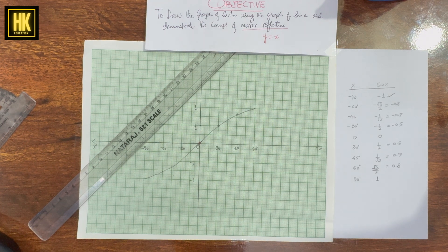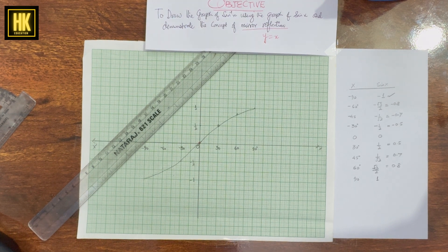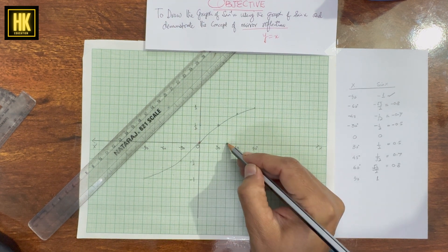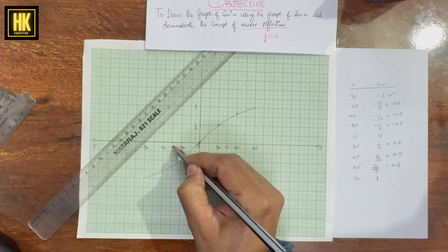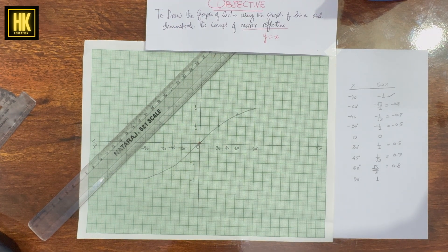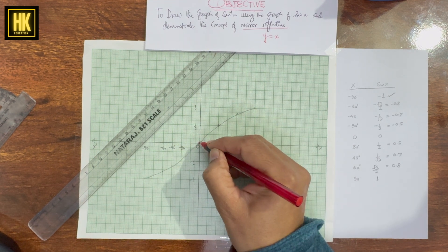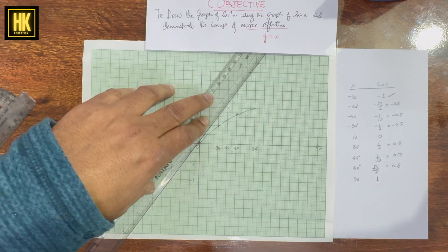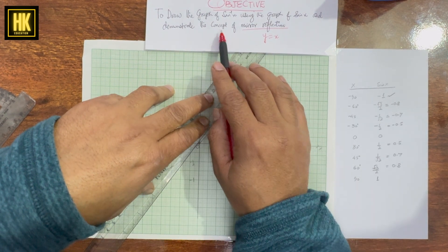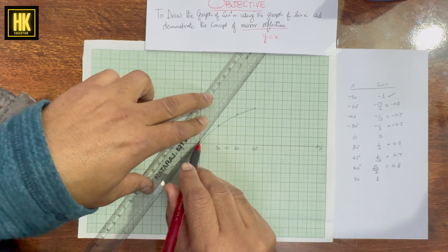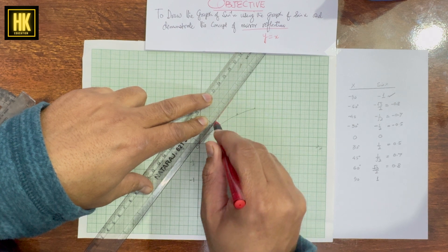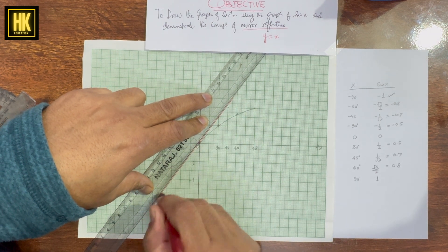Now we will draw a line equally inclined with the coordinate axes at 45°. For the mirror reflection, we draw the line y = x. This line y = x acts as the mirror.